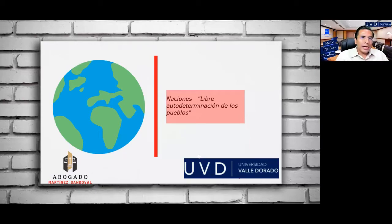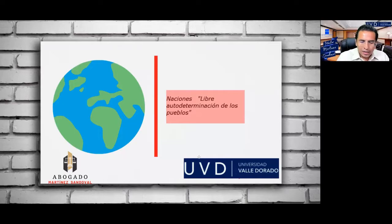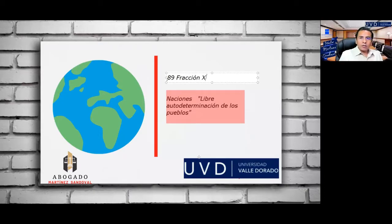El artículo 89, fracción décima de nuestra Constitución establece cuál es la política exterior que seguirá el gobierno de México.